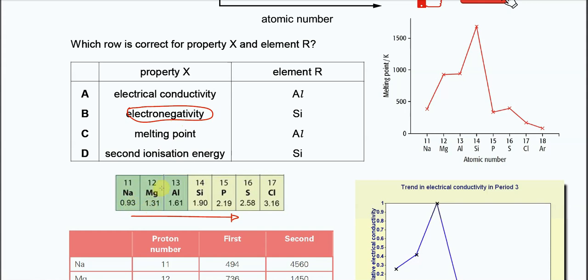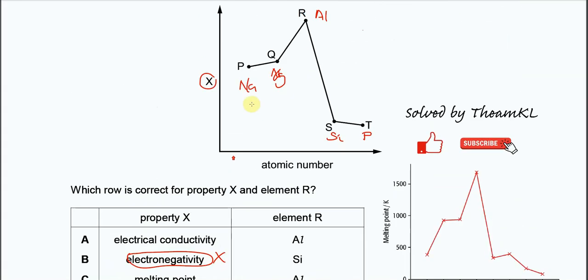Until phosphorus is 2.19. So it will increase, it's going up. That's why property X is not electronegativity, because it doesn't fit the trend here.